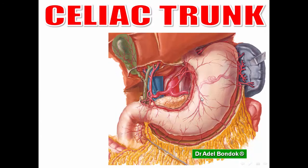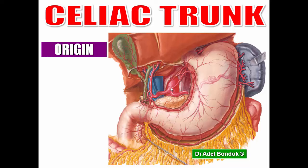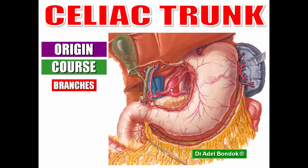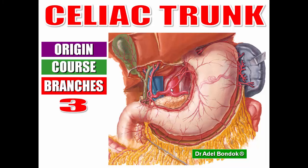Starting with the celiac artery or celiac trunk: this artery arises from the front of the abdominal aorta at the level of the upper border of L1. It is a very short trunk that immediately divides into three branches. The first branch is the smallest — the left gastric artery. The second one is the splenic artery.